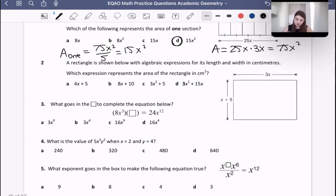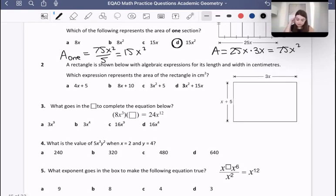Number two. The rectangle is shown below with algebraic expressions for its length and its width in centimeters. Which expression represents the area in centimeters squared? Well, that means we need to take the base times the height. So this is going to be 3x times x plus 5. Now, remember the rainbow rule that we did, and I think it was one of the earliest units, where we talked about the rainbow rule or distributive property, how we must multiply the 3x not only by x, but also by the 5. So here we're going to get 3x squared is our first term. And for our second term, it wouldn't just be plus 5. It would be 3x times 5, which is 15x.